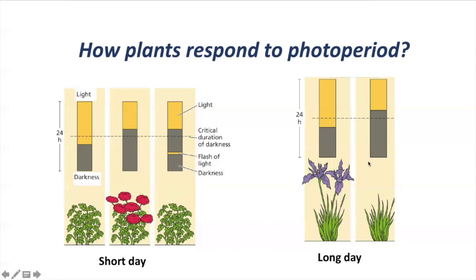Why is this helpful? The electric bill will be significantly different if we apply a night interruption treatment instead of creating an artificial long day by turning the lights on for more than 14 hours. Plants can of course benefit from long days, which can also promote photosynthesis, growth, and development. However, when we are only looking to control photoperiod, we can use night interruption.